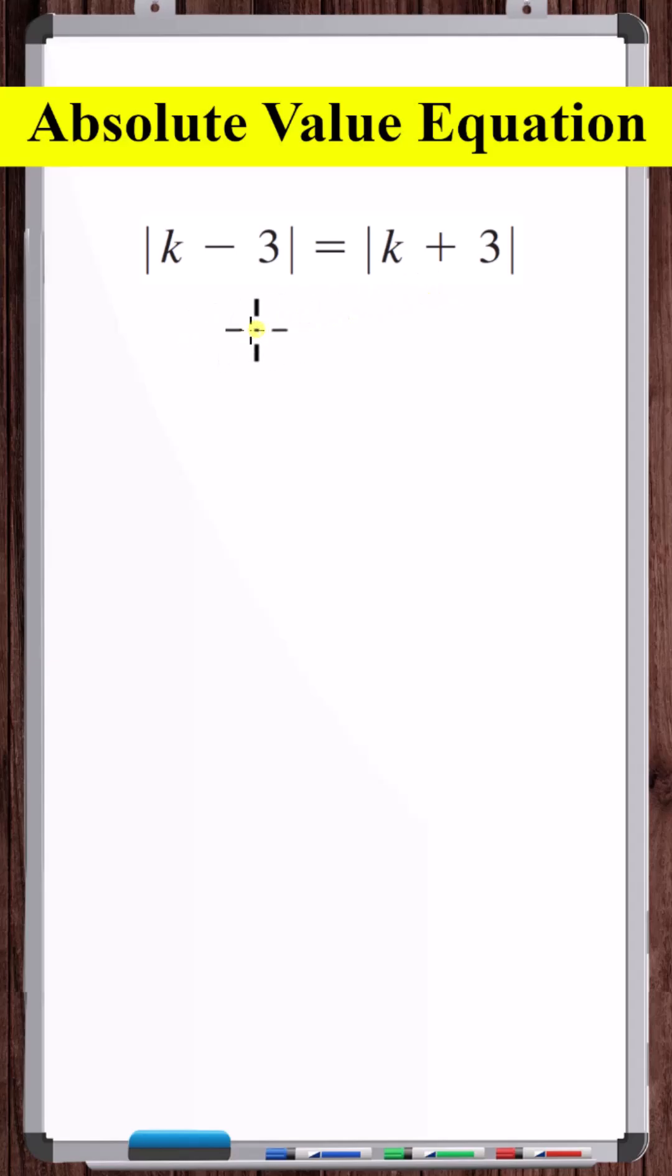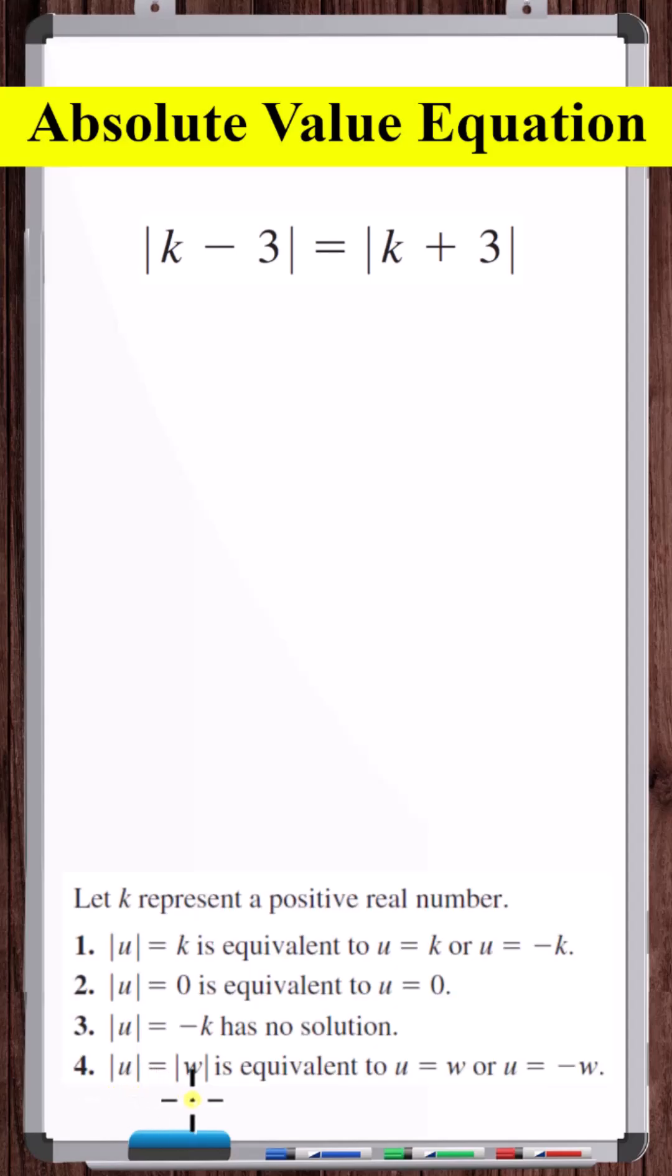Let's solve this absolute value equation. Here we have the absolute value of an expression equal to the absolute value of another expression. If we check the properties of absolute value equations, we've got scenario four.